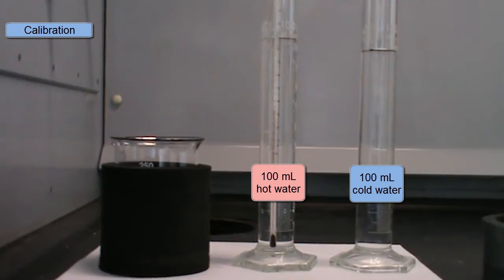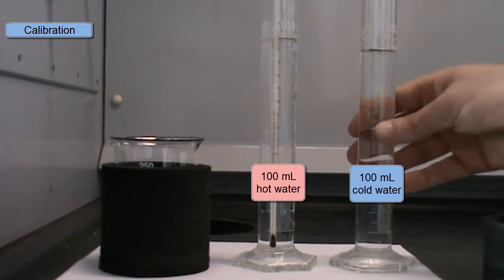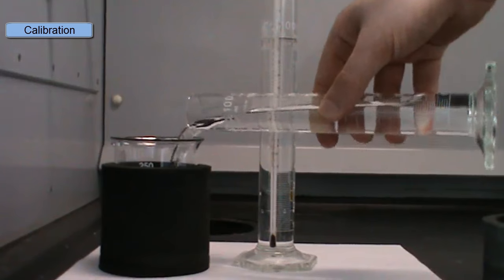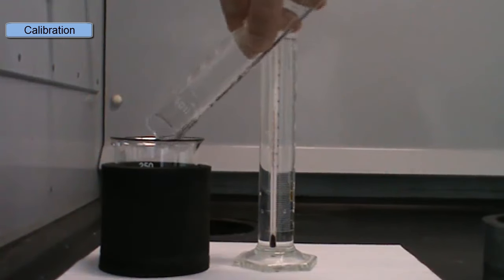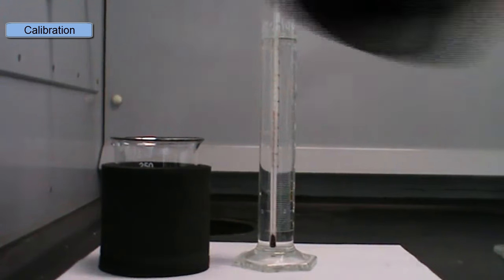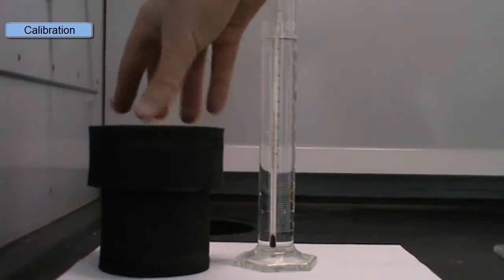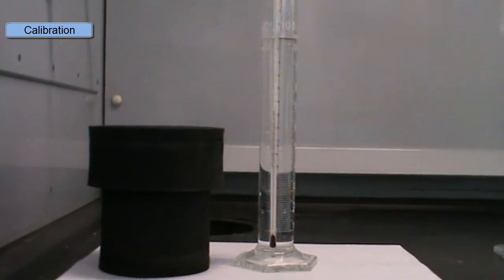So in the calibration step we'll take 100 ml of hot water and 100 ml of cold water. We'll add the cold water into the calorimeter, put on the lid and measure its temperature. So we'll put in our thermometer and we'll measure the temperature. This is the temperature of the cold water.